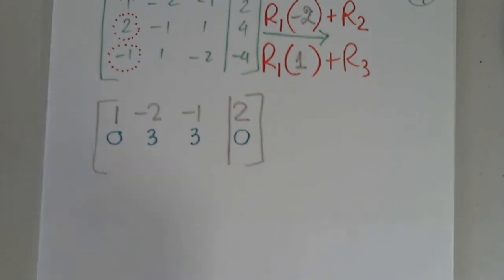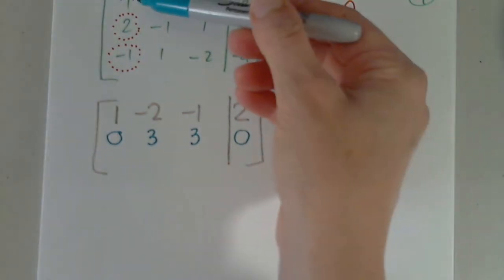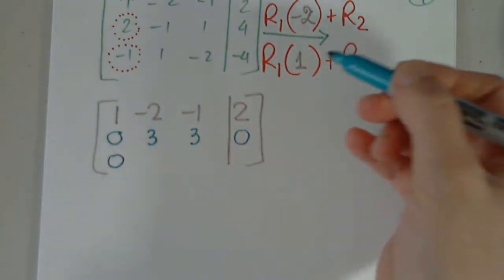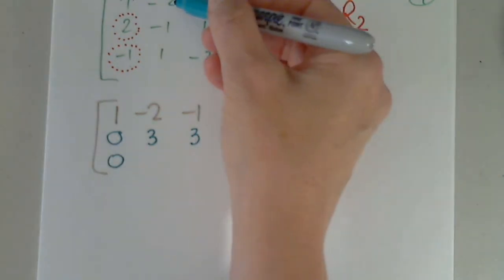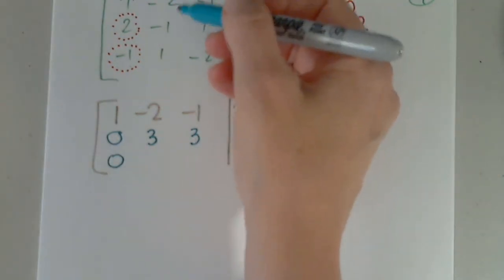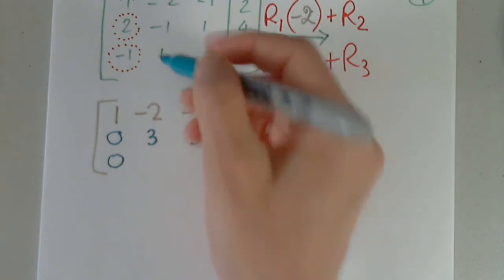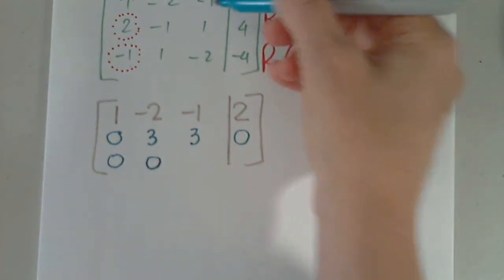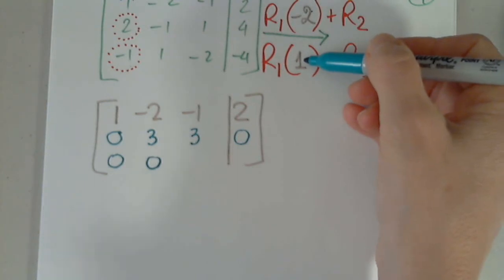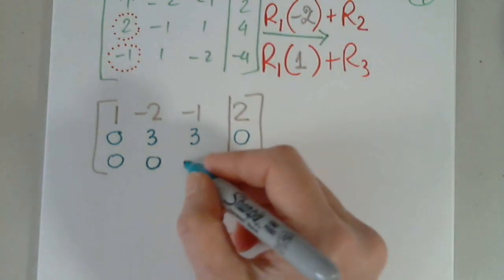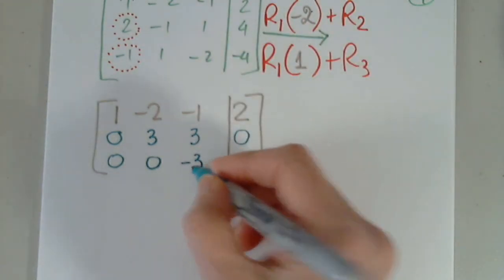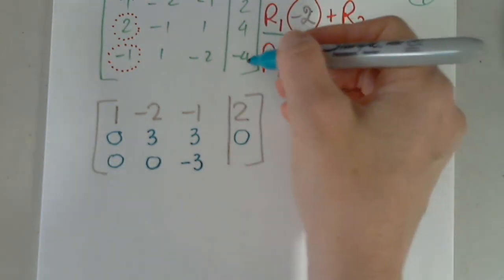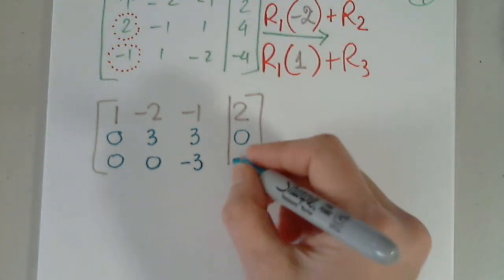With the third row now: one times one minus one. One times negative two, negative one, plus one. Negative one times one, negative one, minus two. Negative two times one is two, minus four, negative two.